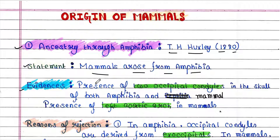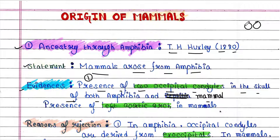What are the evidences of this theory? The first evidence is the presence of two occipital condyles in the skull of both amphibia and mammals. Occipital condyles are two rounded knob-like structures at the base of the skull. These two knobs articulate with the first vertebra, and this feature is found in amphibia as well as mammals.